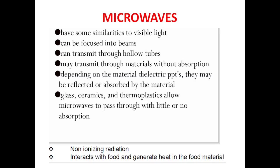Microwaves can also transmit through hollow tubes just like light — allowing us to provide a directed path for microwaves to bend and flow. They may also transmit through certain materials without absorption, just as light passes through transparent materials like glass. However, materials transparent to light may not be transparent to microwaves.